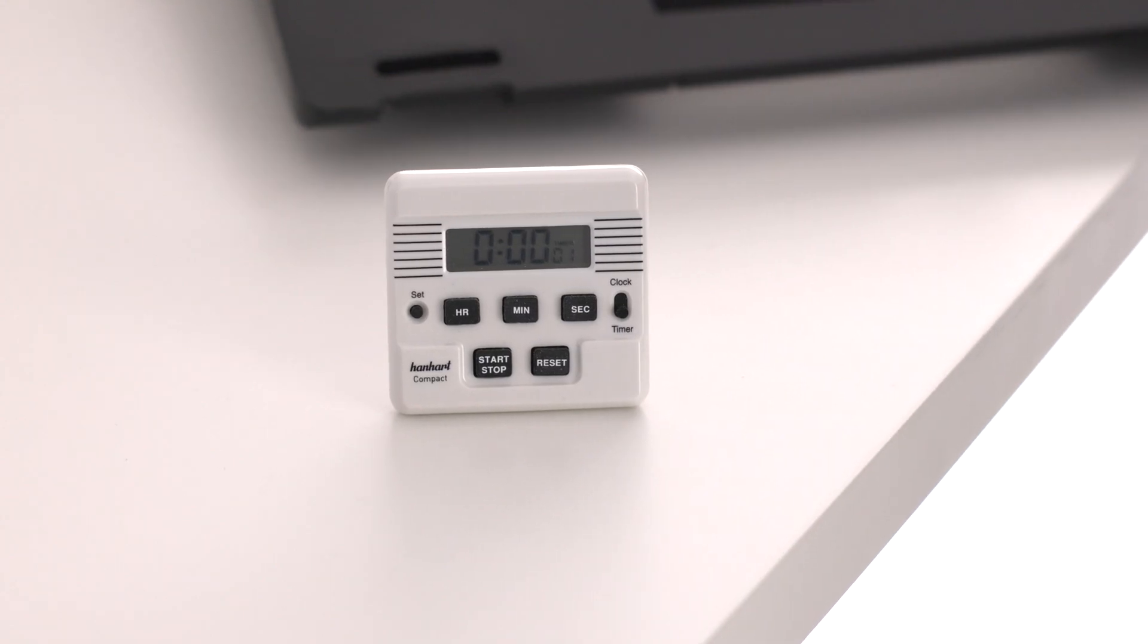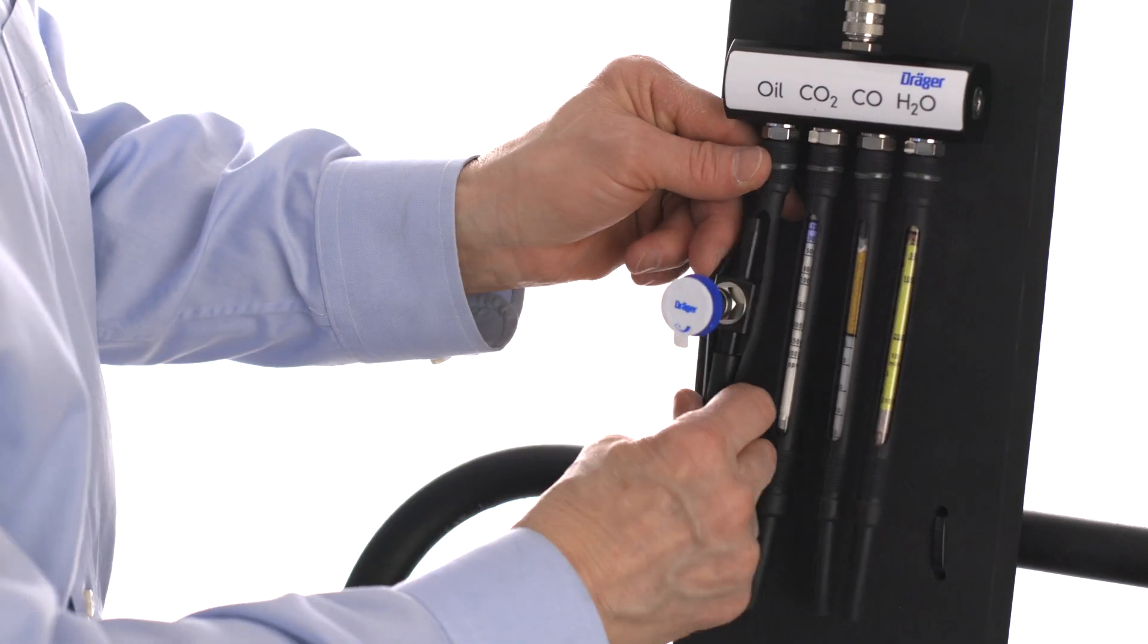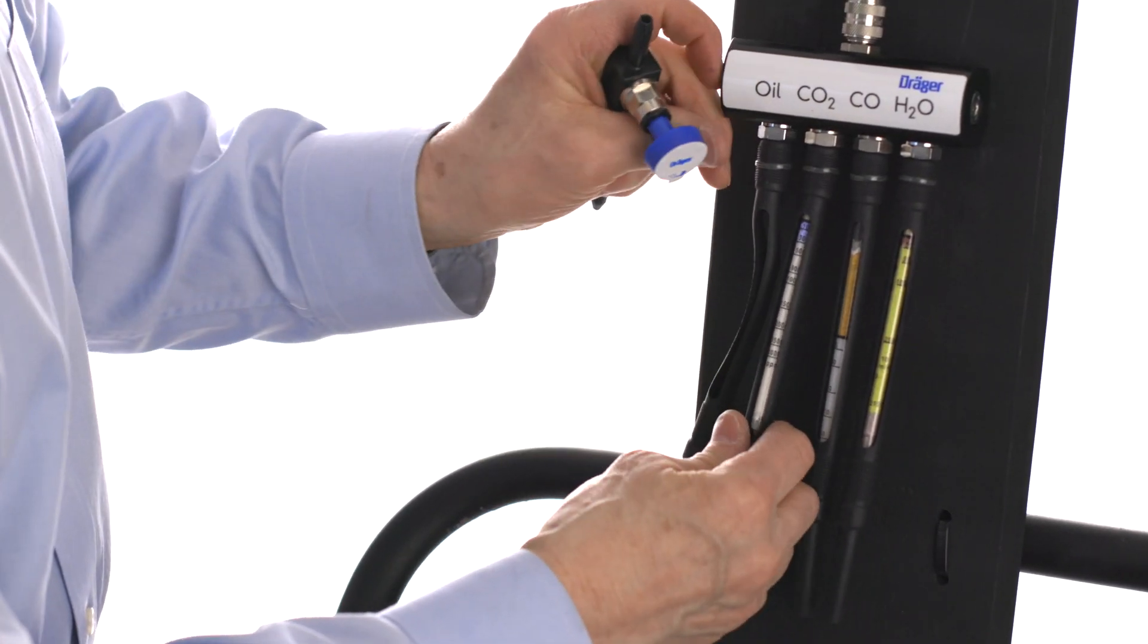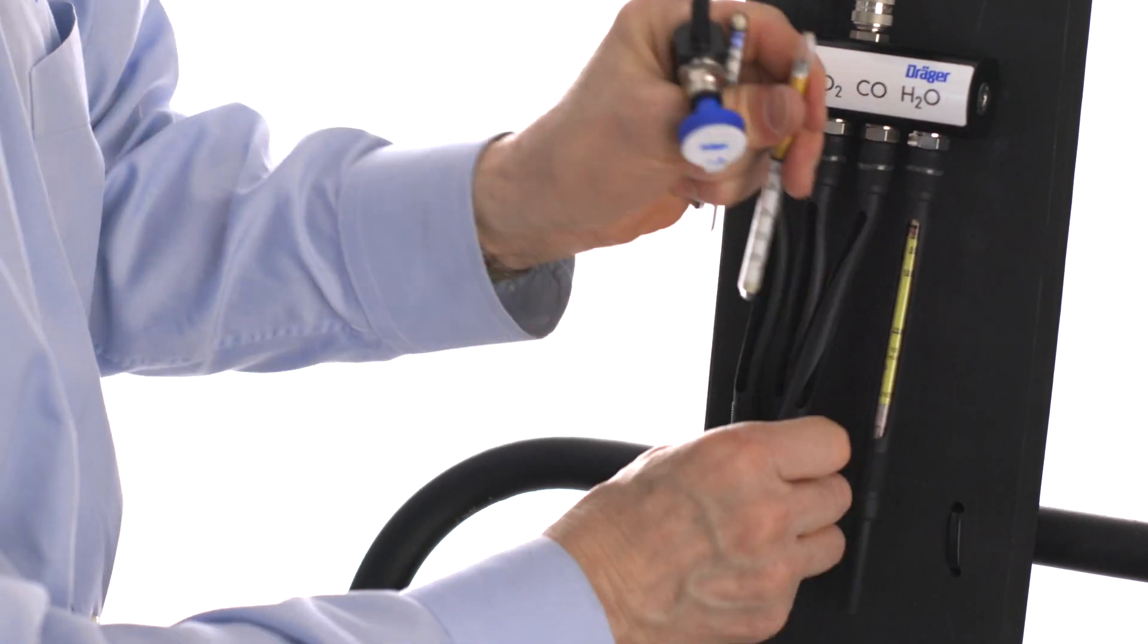When the timer sounds, immediately reset it to 5 minutes. Then remove and evaluate the oil impactor, carbon dioxide, and carbon monoxide tubes while the test continues for water vapor.